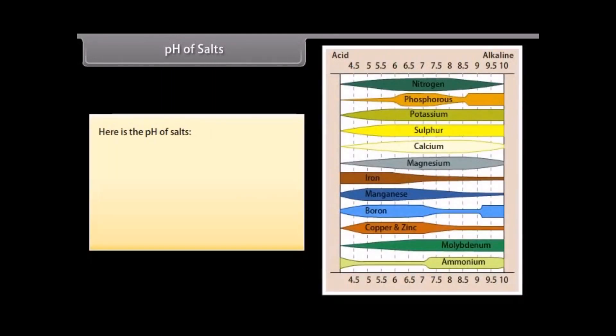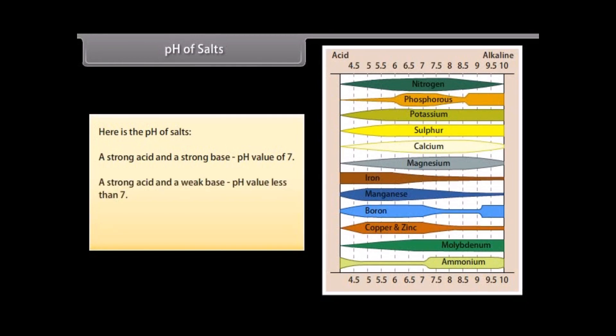pH of salts: a strong acid and a strong base produce a salt with a pH value of 7. A strong acid and a weak base produce a salt with a pH value less than 7. A strong base and a weak acid produce a salt with a pH value more than 7.